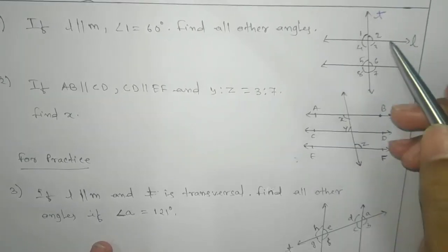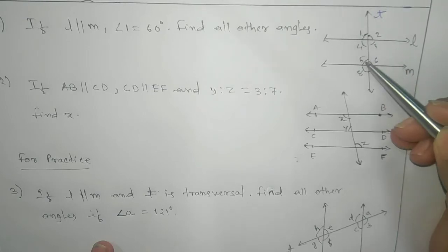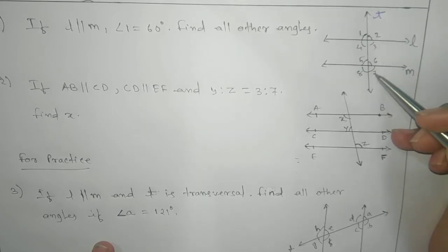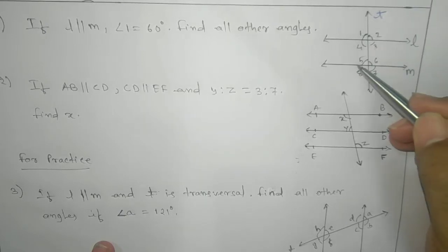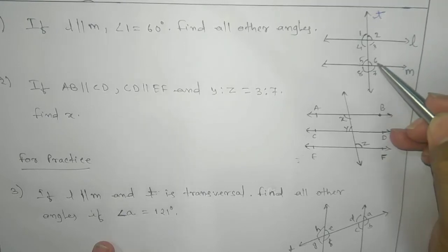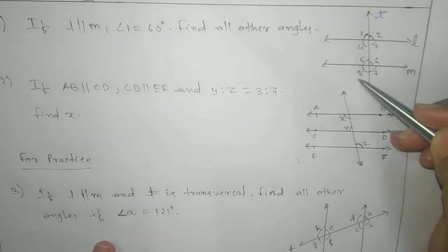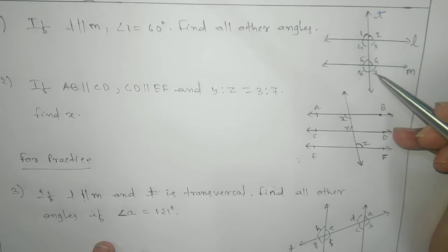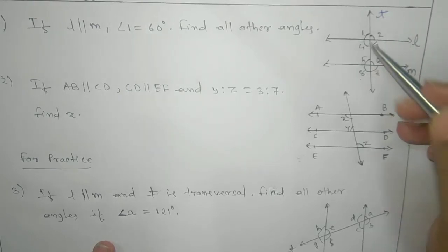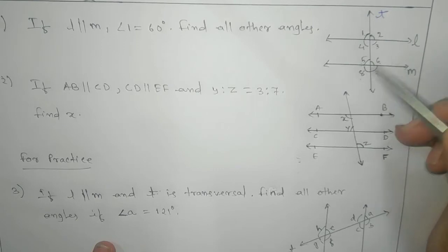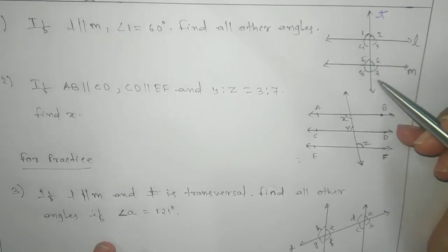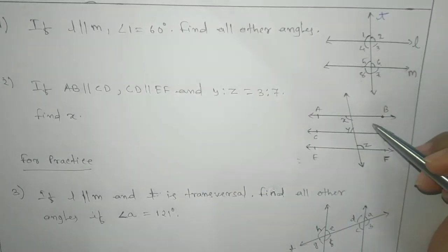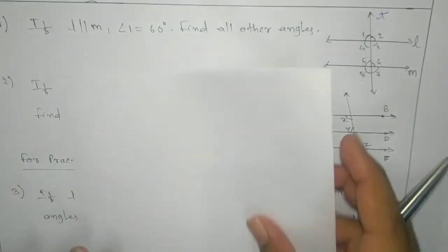We know that angle 1 is corresponding to angle 5, angle 2 corresponds to angle 6, angle 4 corresponds to angle 8, and angle 3 corresponds to angle 7. Angles 3 and 5 are alternate interior angles; angles 4 and 6 are alternate interior angles. Angles 2 and 8 are alternate exterior angles; angles 1 and 7 are alternate exterior angles. Angles 2 and 4 are vertically opposite; angles 1 and 3, angles 6 and 8, and angles 5 and 7 are vertically opposite pairs.